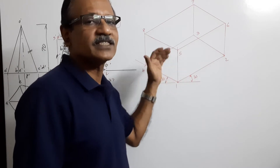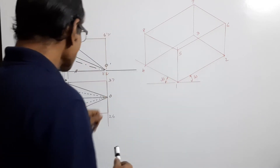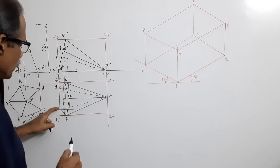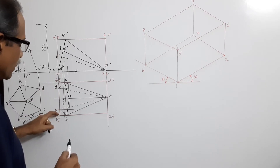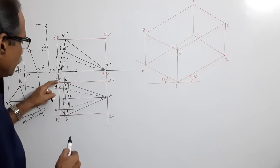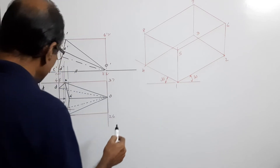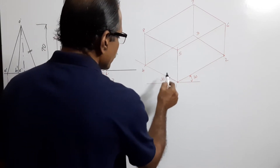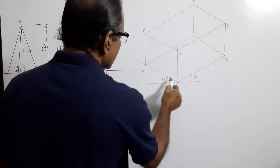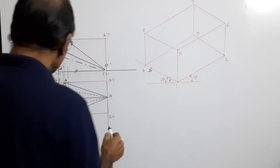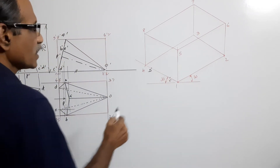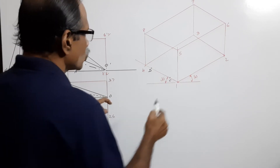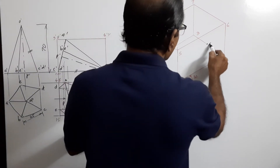Now we have to locate the points in this box. Where is c? C is on the way from 1 to 4, this much away from 1. The same distance applies to d from 4. Take this small distance and mark it here — you get c and you get d. At the center of 2-3 is o.